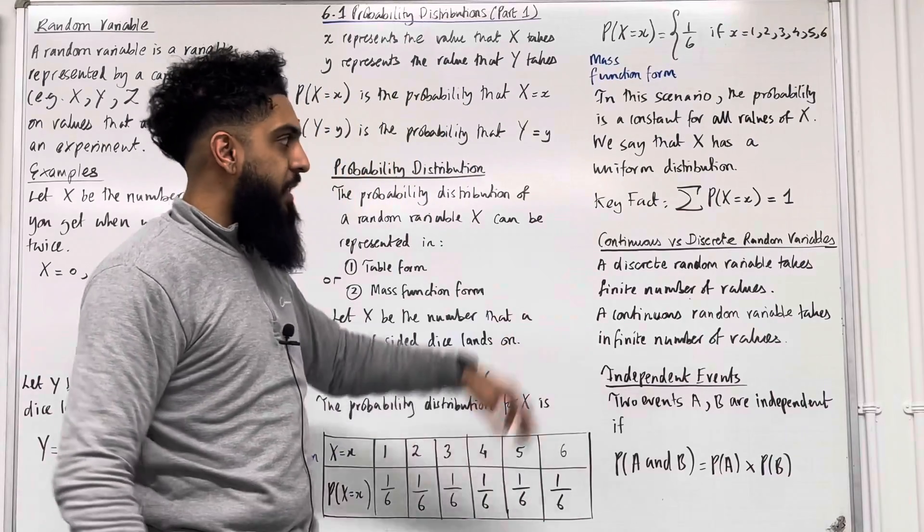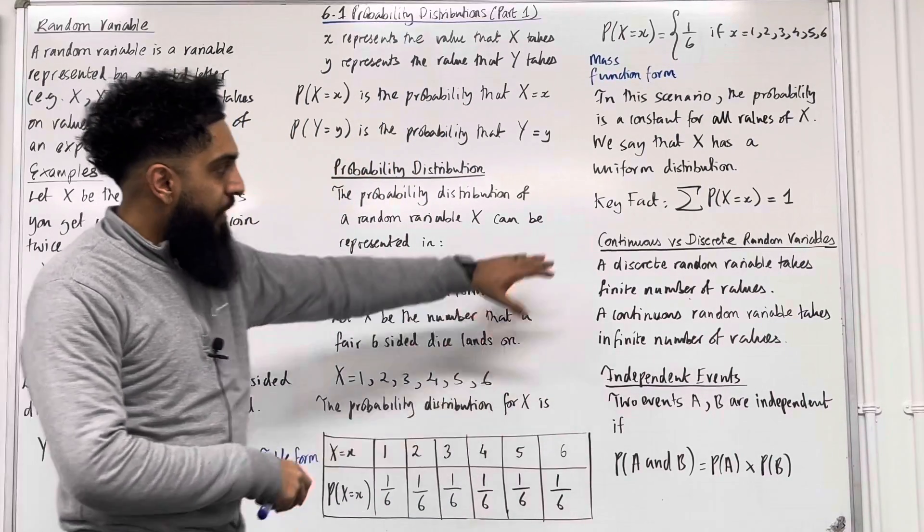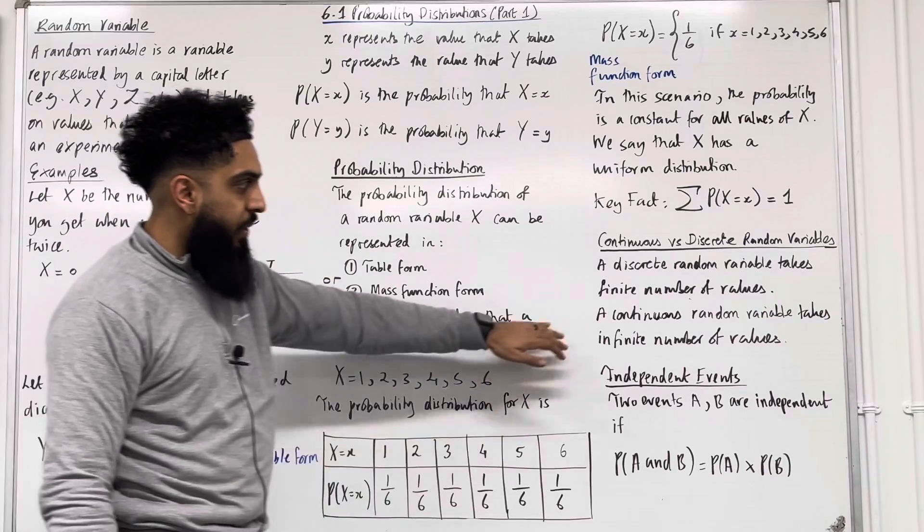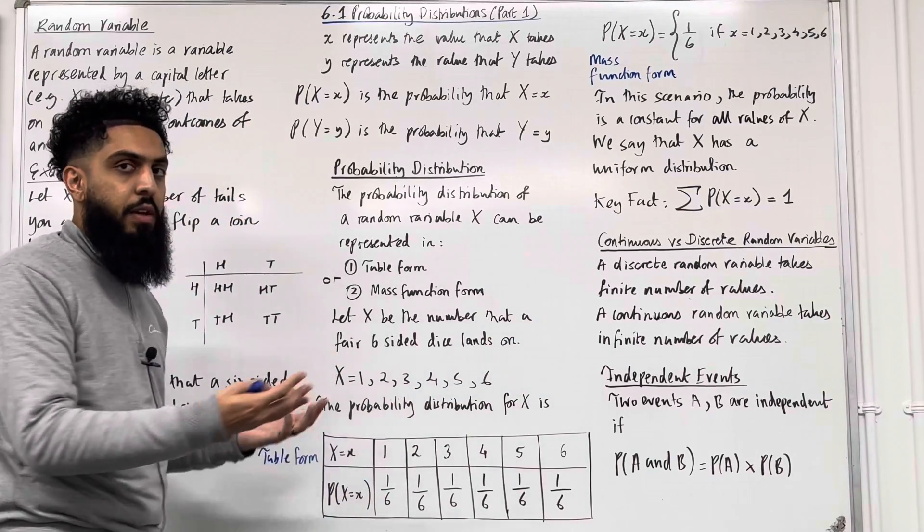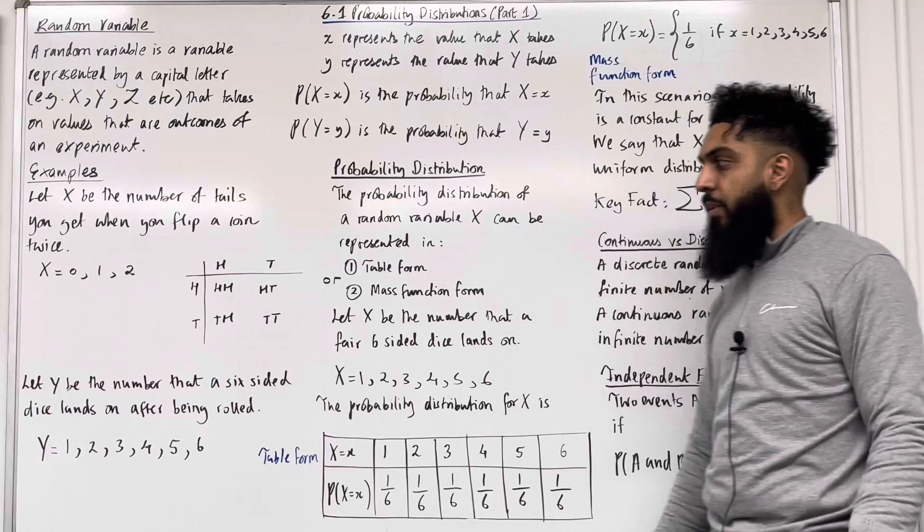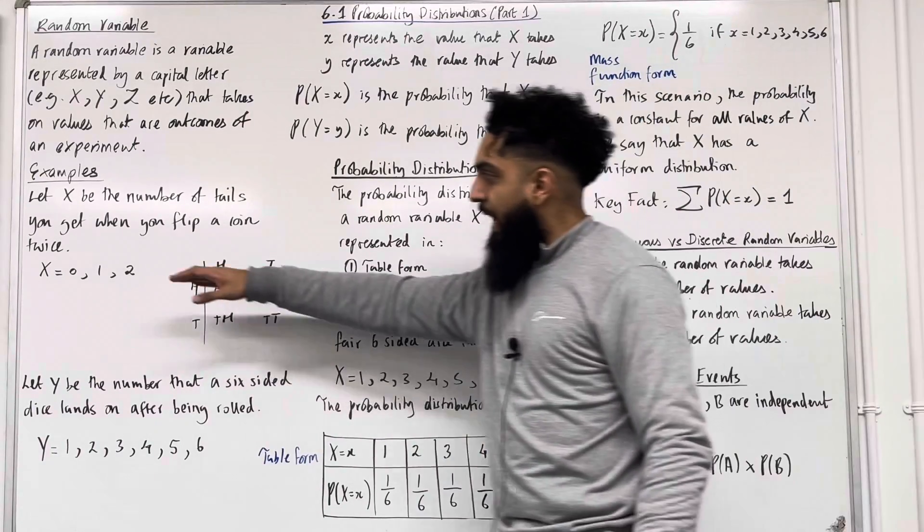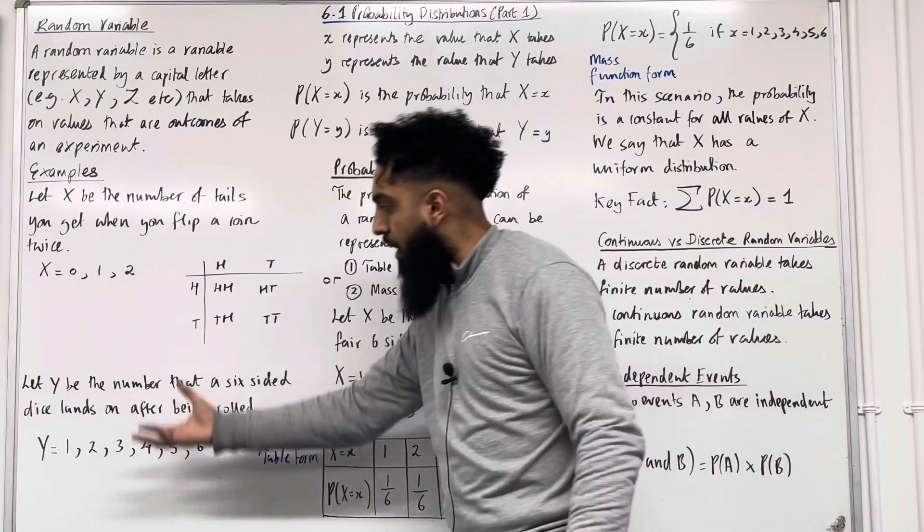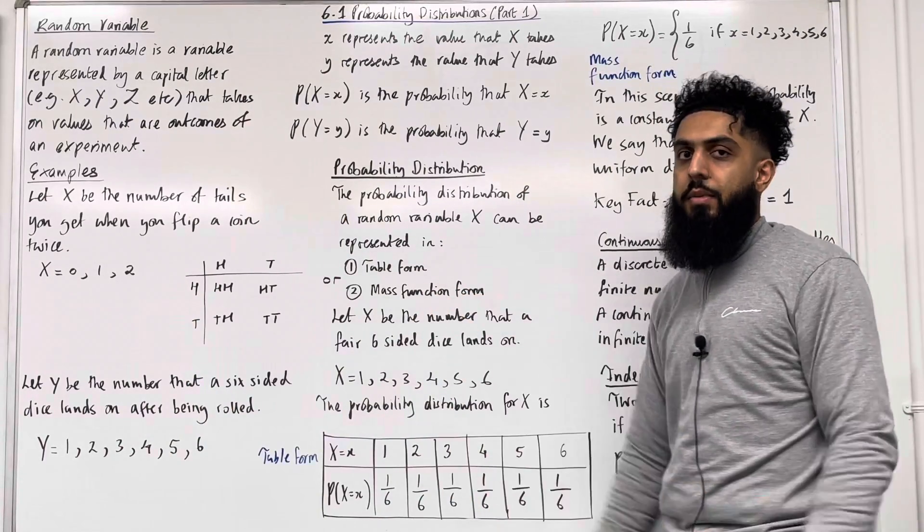A discrete random variable takes on a finite number of values. A continuous random variable takes on an infinite number of values. In Year 1 maths we focus on discrete random variables. Over here you can see that these discrete random variables are actually discrete because they take on a finite number of values, not an infinite number of values.